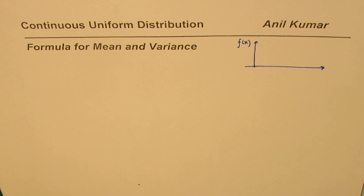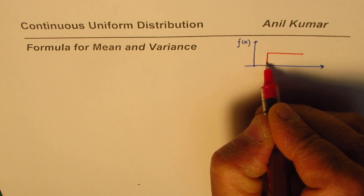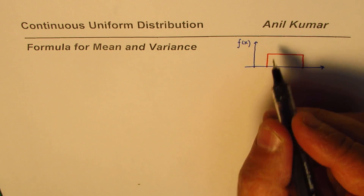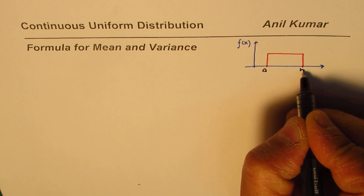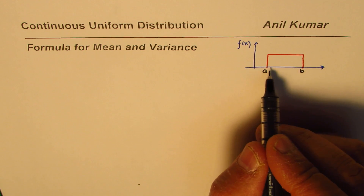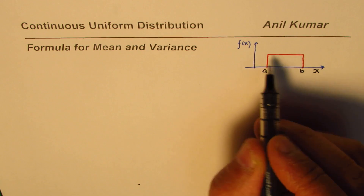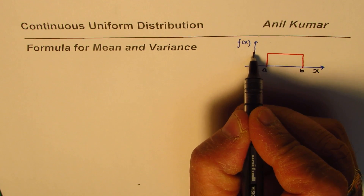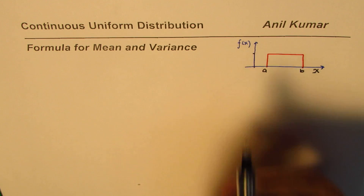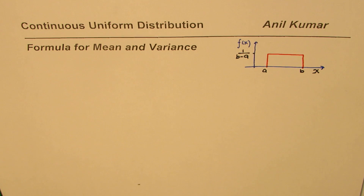Let us say the function is defined over a fixed interval between a and b. It's a uniform distribution, so it's kind of like a rectangle — a continuous uniform distribution. Whenever we talk about continuous uniform distribution, we have an interval from a to b. Any real number between this interval has the same probability, f(x), and the area of the rectangle should be 1, which gives you f(x) = 1/(b - a).